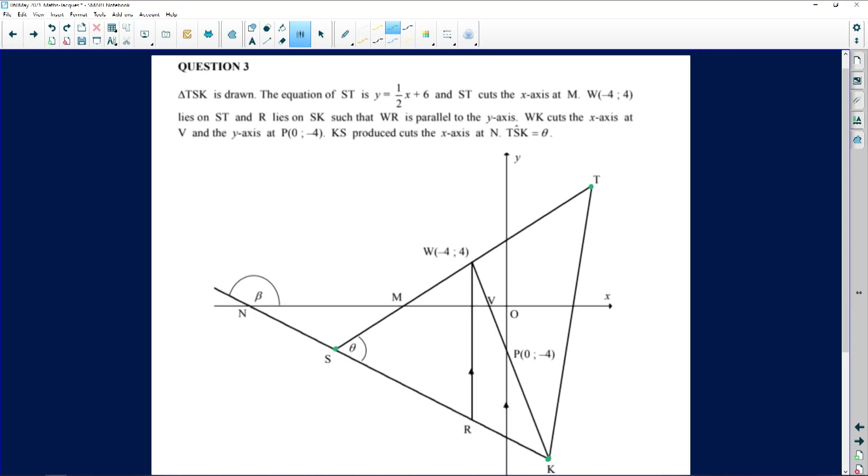Why is that important? Because if you have parallel lines you must have a straight line that cuts it, else those angles won't be equal amongst other things. Let's see, the equation of ST they've given us: y equals a half x plus six. Important here is the fact that that gradient is a half. ST cuts the x-axis at M. W(-4, 4), which is this point, lies on the line segment ST and R lies on SK.